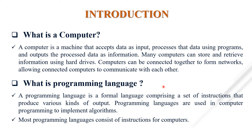A programming language is a formal language comprising a set of instructions that produce various kinds of output. Programming languages are used in computer programming to implement algorithms. Computers think in binary strings of 1s and 0s, and programming languages allow us to translate those into something humans can understand and write. A programming language is made up of a series of symbols that serves as a bridge, allowing humans to translate their thoughts into instructions that computers can understand.